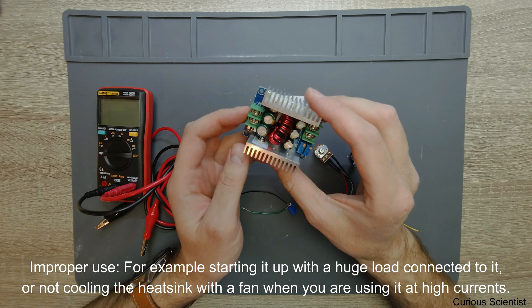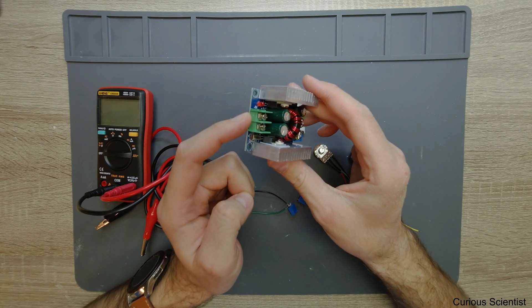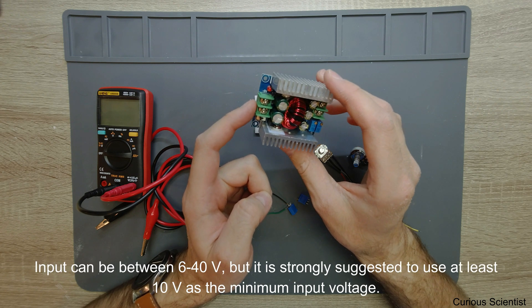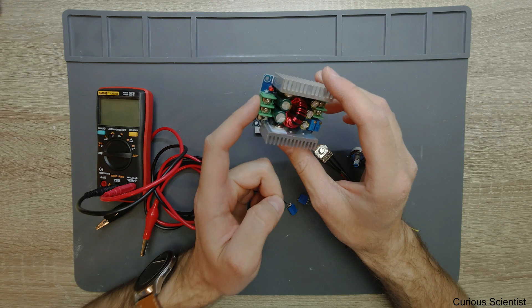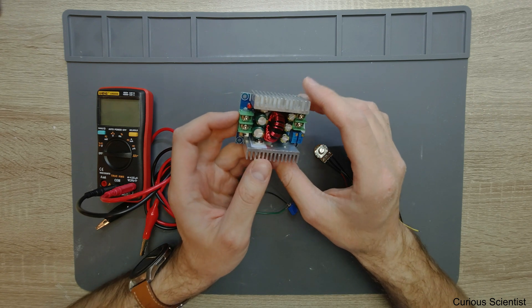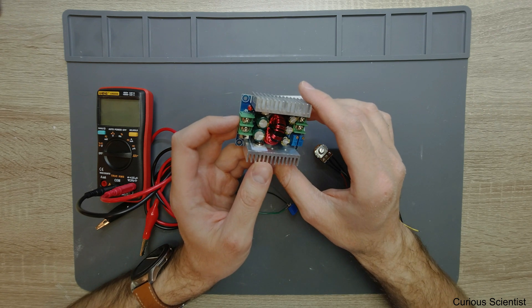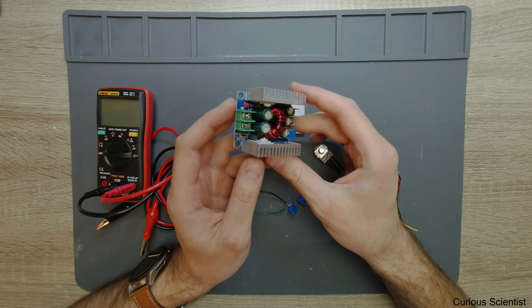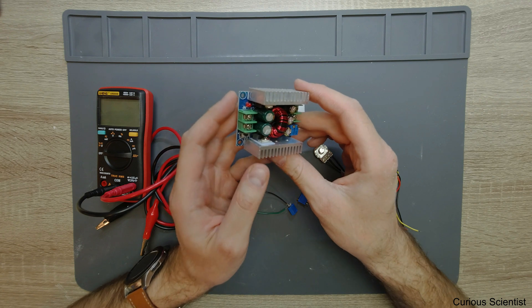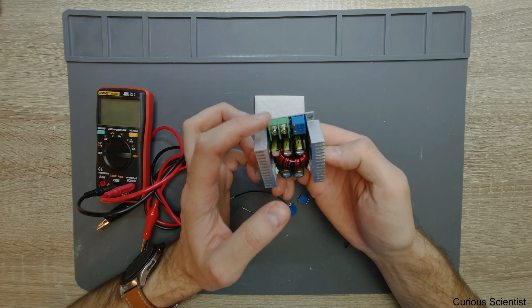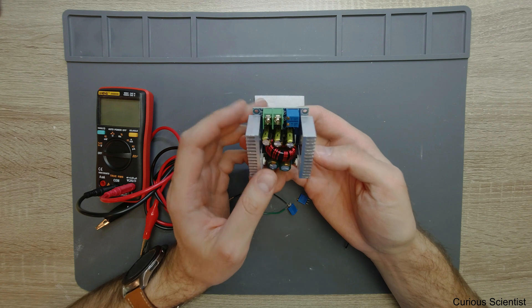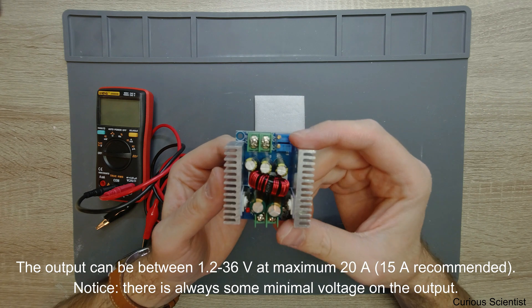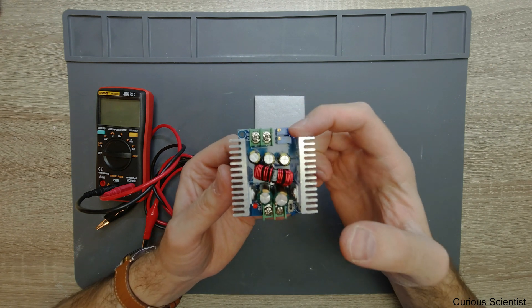What this does is it takes power on the input that should be between 4 to 40 volts, but they recommend at least 10 volts as the minimum voltage. I guess that's because of the efficiency of the conversion. On the output you can have your regulated voltage and current.